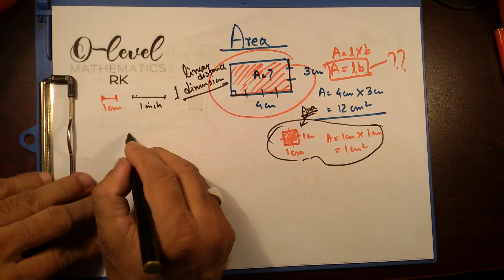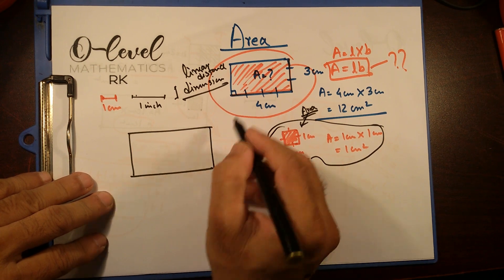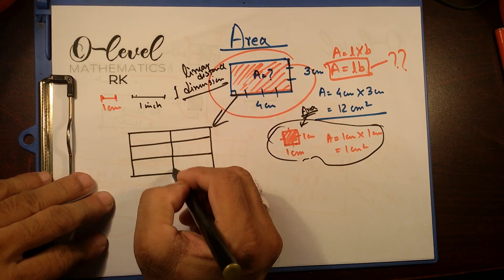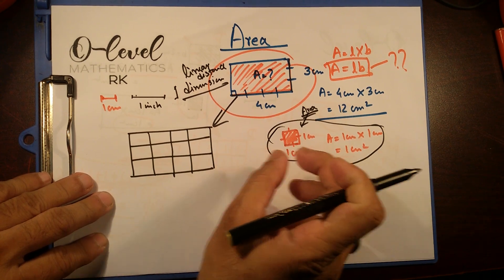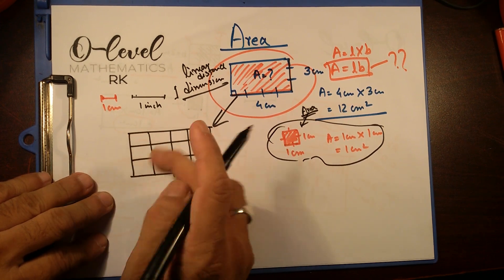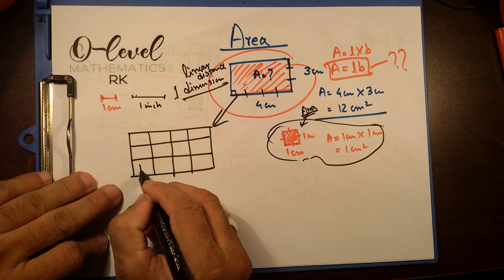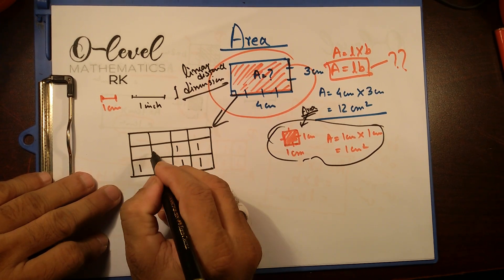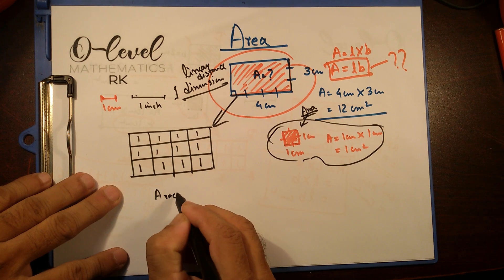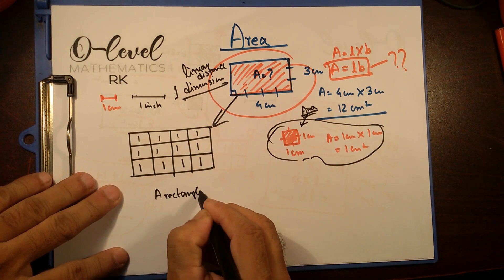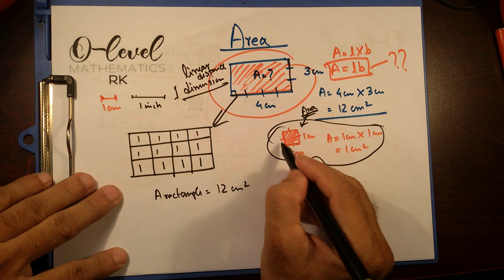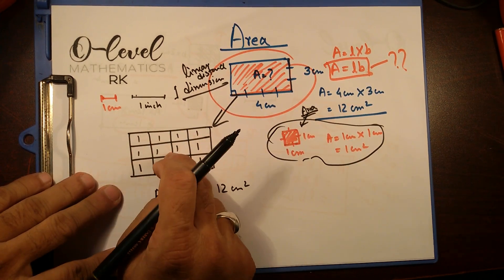Coming back to the four centimeter by three centimeter rectangle — I'm going to redraw this. This side is three and this side is four. We are going to fill up this rectangle with one-square-centimeter shapes. Counting them: 1, 2, 3, 4, 5, 6, 7, 8, 9, 10, 11, 12. The area of this rectangle equals 12 square centimeters, because that shape fits twelve times in this rectangular shape. This is the reference area — comparing with the one-square-centimeter unit, we figured out the area of this rectangle.